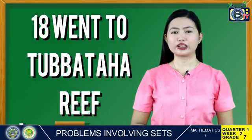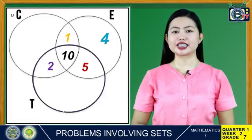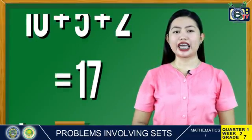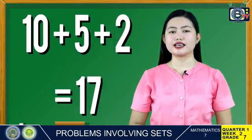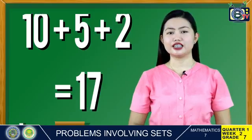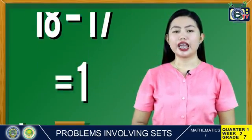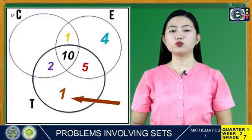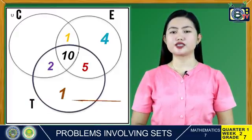18 went to Tubataha Reef. Add all the given elements of set T — elements in the brown circle — that is 10 plus 5 plus 2 equals 17. Subtract the total from 18: 18 minus 17 equals 1. Put 1 in set T only. This completes the 18 students.